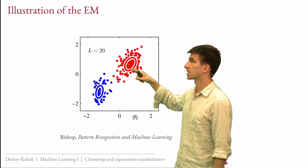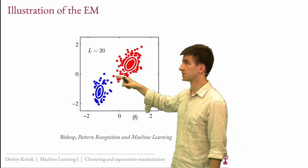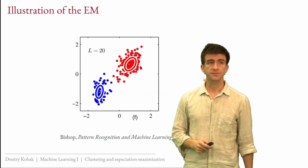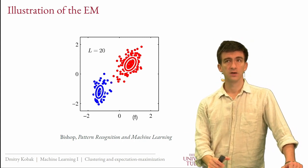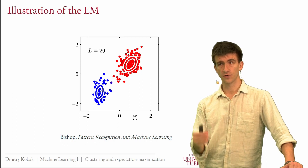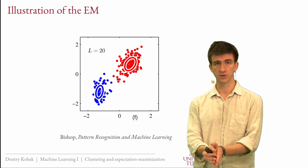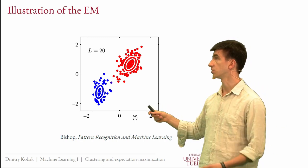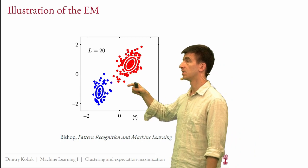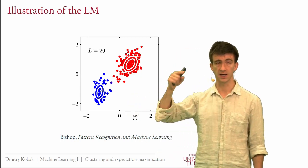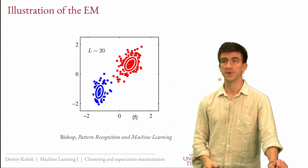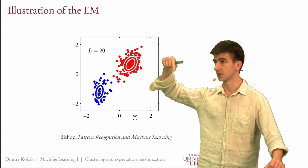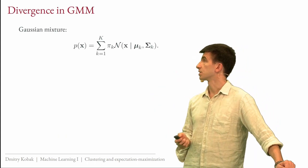Lloyd's algorithm converges in the sense that it will stop — you reach an iteration after which nothing changes anymore. That is not the case for GMM. GMM converges in the sense that it becomes stable, and the updates from iteration to iteration become very small, but it will not entirely converge. It's like gradient descent — you approach the minimum closer and closer.